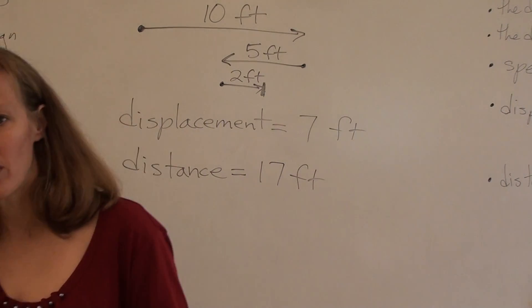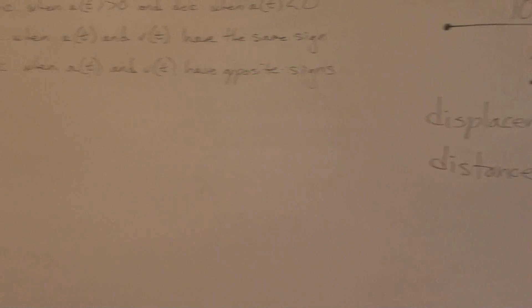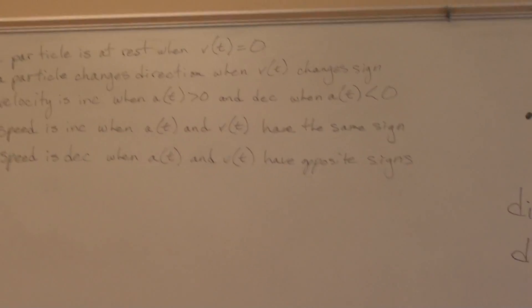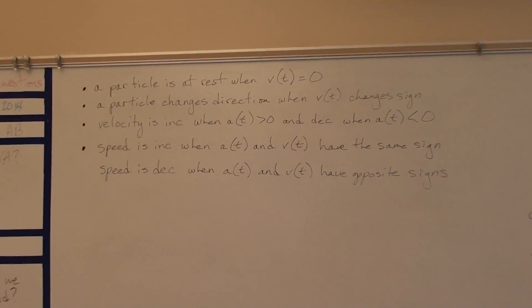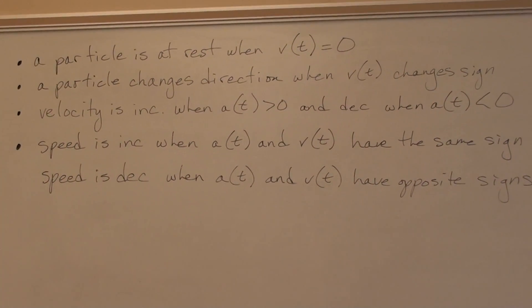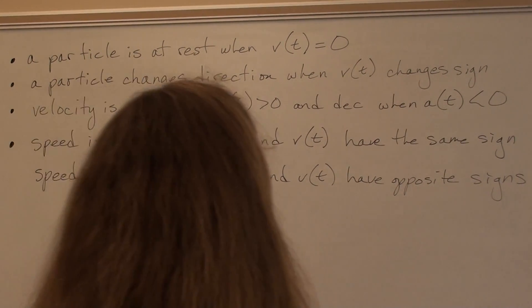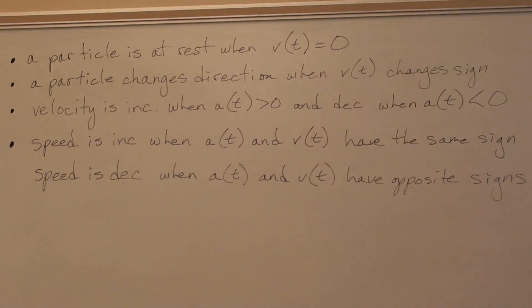Do you get the difference? Displacement is how far you are from where you started. Distance is how far you actually traveled during that whole thing. I have four more quick notes I do want you to just copy down. A particle is at rest when the velocity is zero. When a velocity is zero, that means you've stopped. The particle changes direction, we often call this particle motion. You'll see it called linear motion, particle motion, whatever. The particle changes direction when the velocity changes sign. Oh, I sense some sign lines coming on.